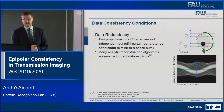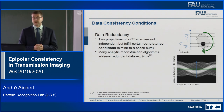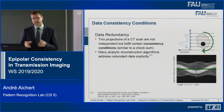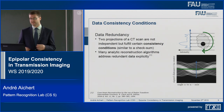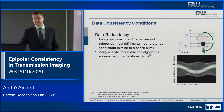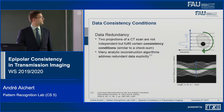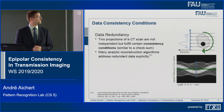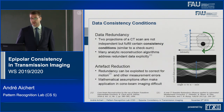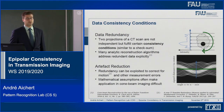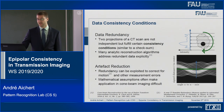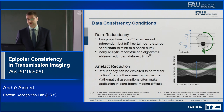To start, I'll briefly define what data consistency conditions are. Two projection images in a CT scan are not independent — they fulfill certain consistency conditions because there is redundant information in both. It's sort of like a checksum: if there is an error in the acquisition or some assumptions are not met, this redundant information will not be exactly identical in the two images. We will be using consistency conditions for artifact reduction and motion estimation in x-ray images.